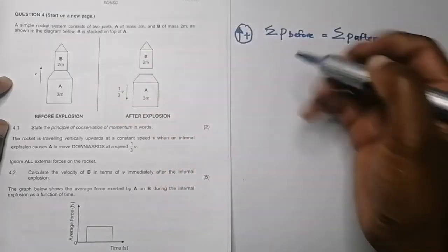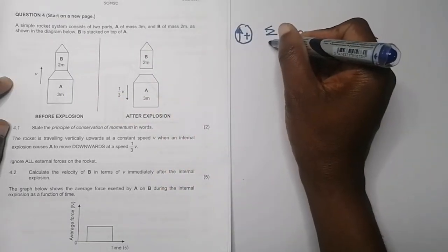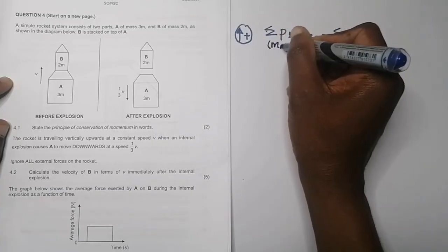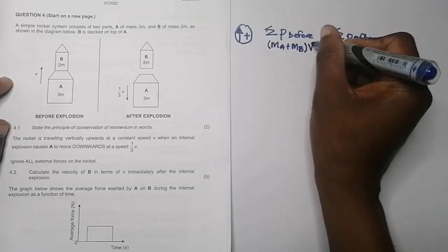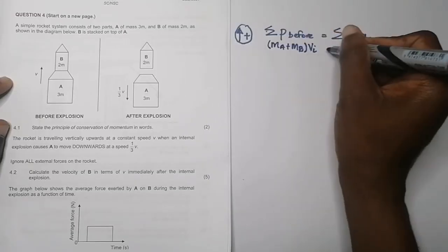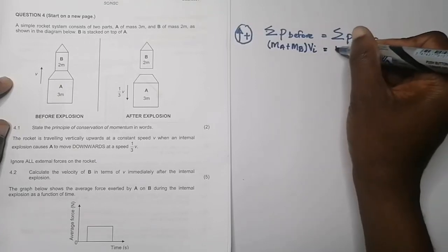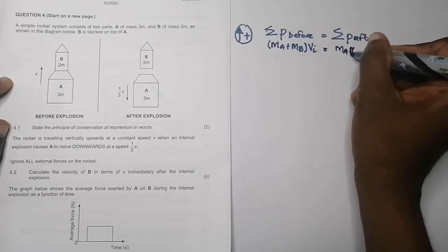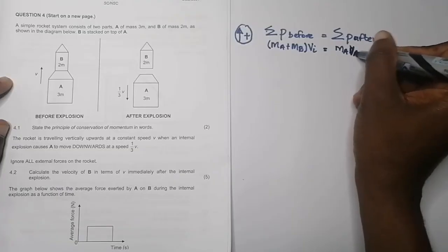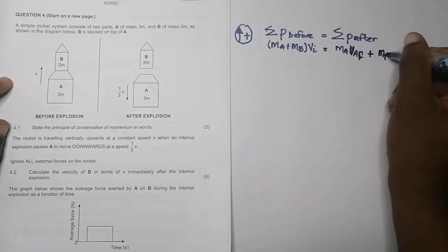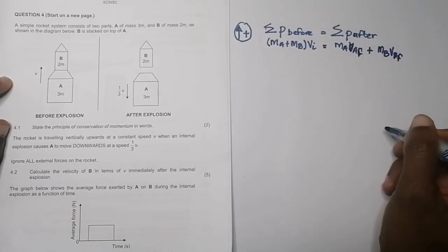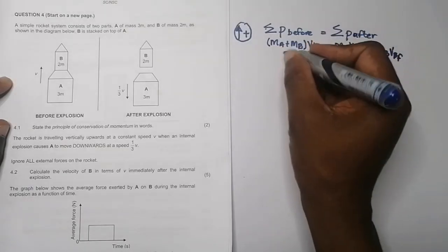We know that the sum of their momentums before collision is equal to the sum of their momentums after collision. We've taken up as positive. Initially, before collision, they were both moving together, so it will be the mass of A and B, so I'm just going to say mass A plus mass B multiplied by the initial velocity.